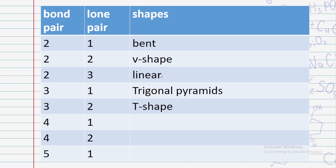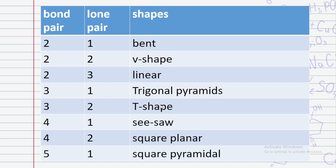Four bond pairs and one lone pair, four bond pairs and two lone pairs, five bond pairs and one lone pair — these follow the pattern of B-L-T-T-S: B, L, T, T, S. Two T's are in the pattern. S gives us square planar and square pyramidal. Remember: S — square — either square planar or square pyramidal.